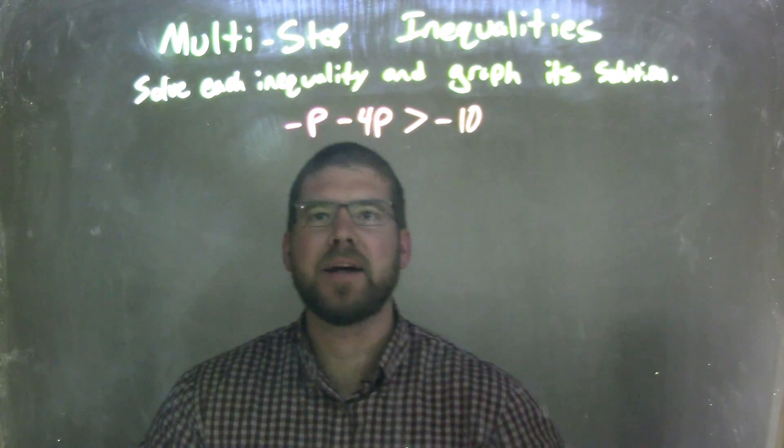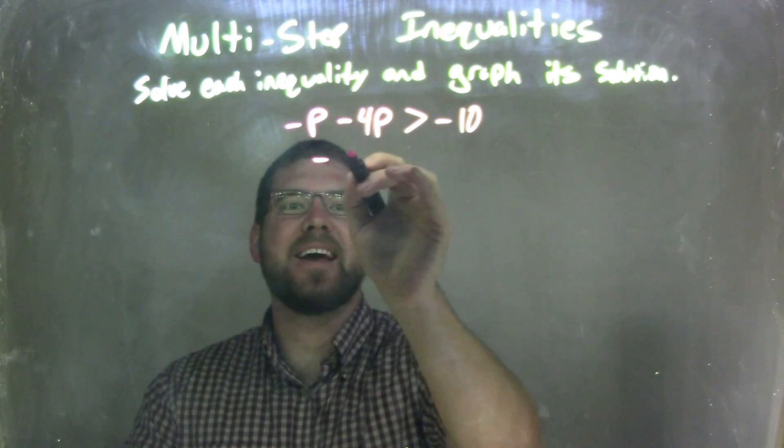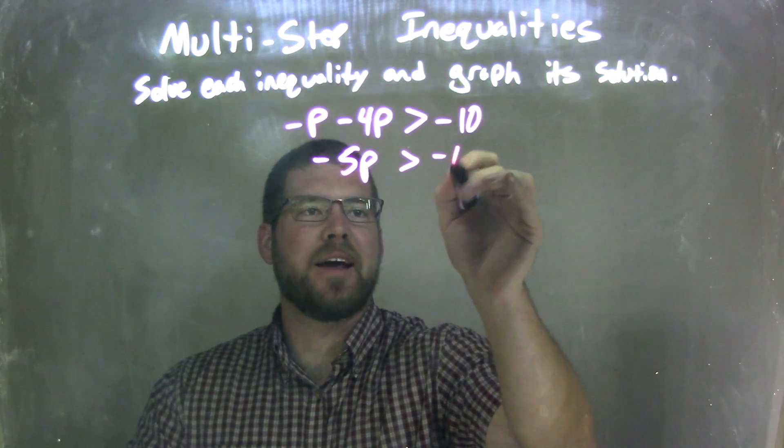I'm going to combine my like terms. Negative P minus 4P is negative 5P, and it's greater than negative 10.